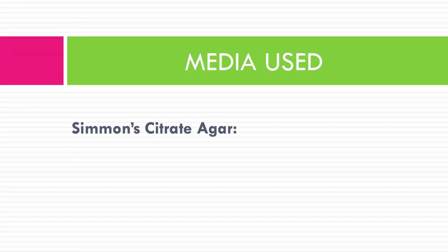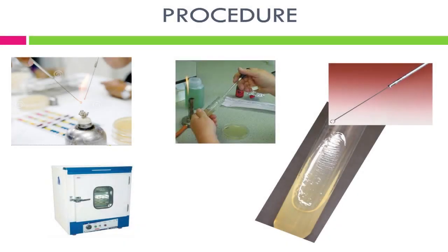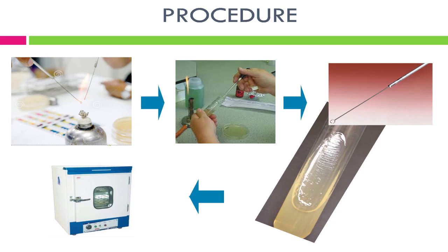The medium used for this test is Simmons citrate agar, which contains bromothymol blue as the indicator. Procedure: sterilize the inoculating loop by flaming on a spirit lamp, touch the tip to a few colonies of the specimen, then streak it on the slant of the citrate agar. Cover and incubate for up to seven days at 35–37°C, then observe for growth and development of blue color indicating alkalization.